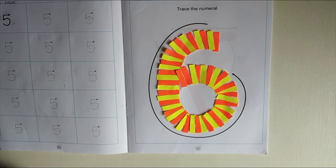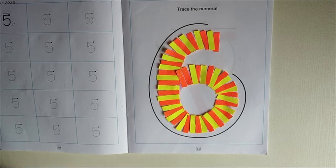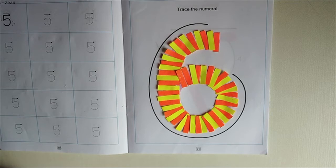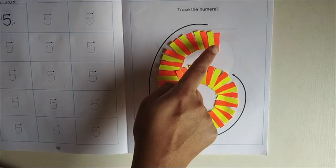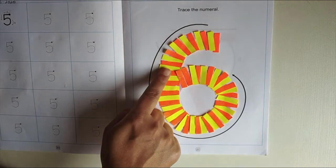Children, my activity is completely dry. So now, you know what we are going to do. I'm going to take my pointer finger and trace the number.